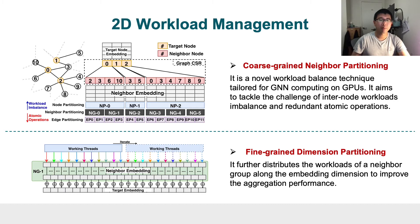Our second design strategy is fine-grained dimension partitioning. It further distributes the workload of a neighbor group along the embedding dimension to improve aggregation performance.